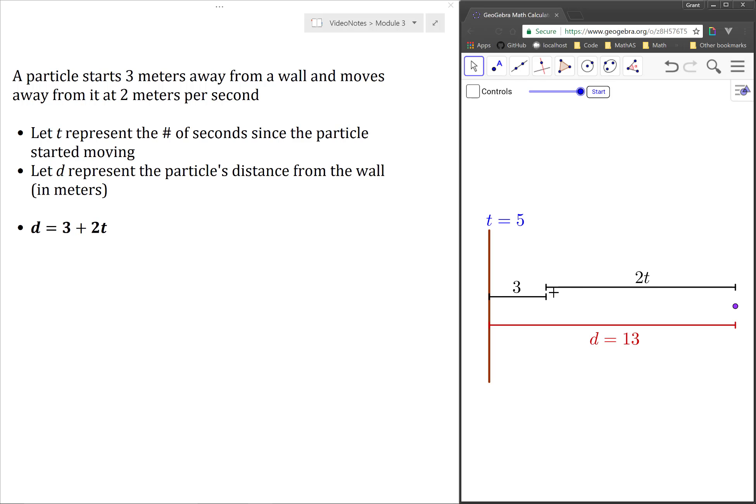Now, hopefully you can see that d should be equal to 3 plus 2t. The formula that expresses d in terms of t is d equals 3 plus 2t.